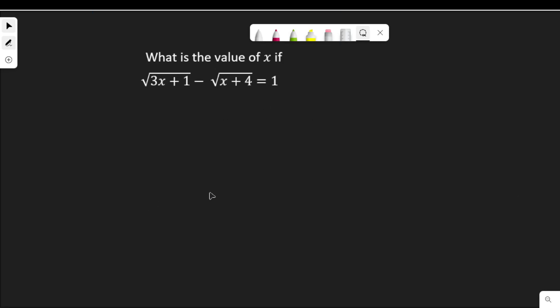What is the value of x if √(3x+1) - √(x+4) = 1?